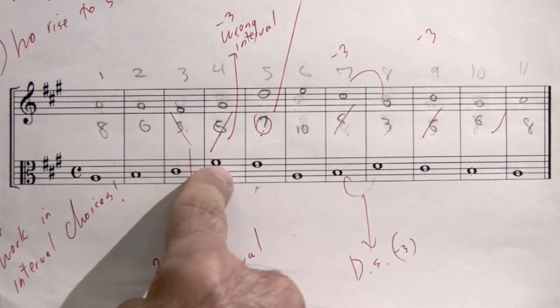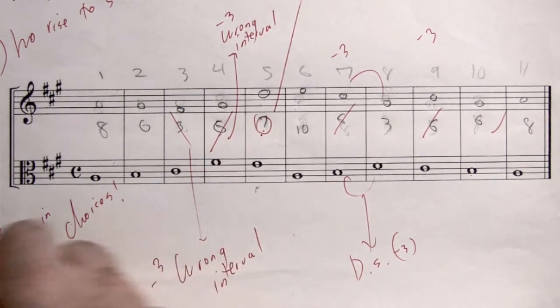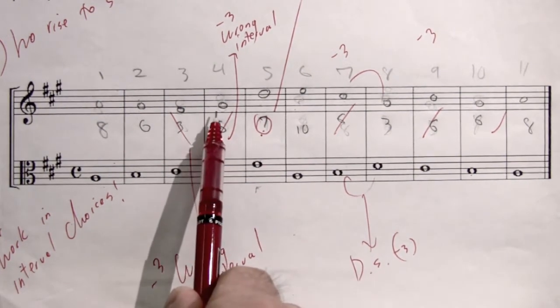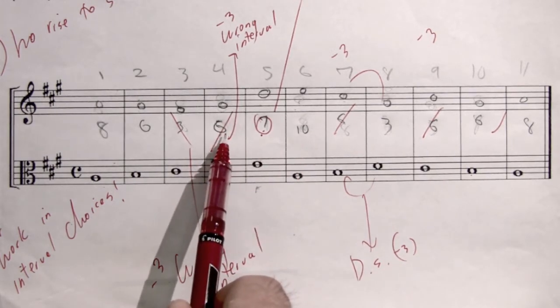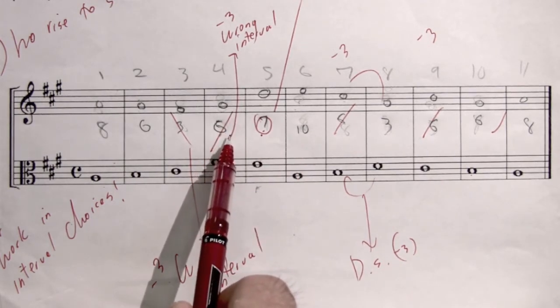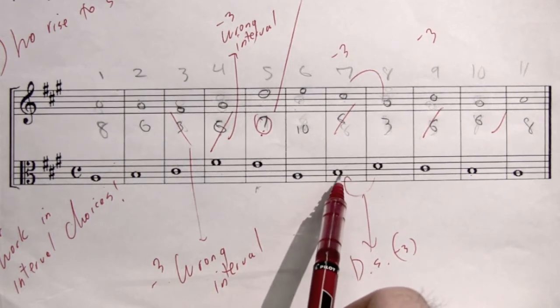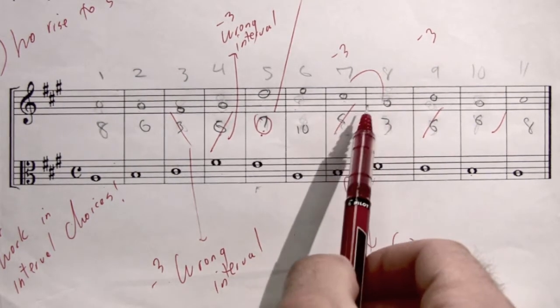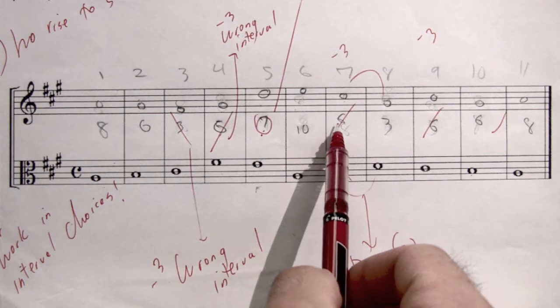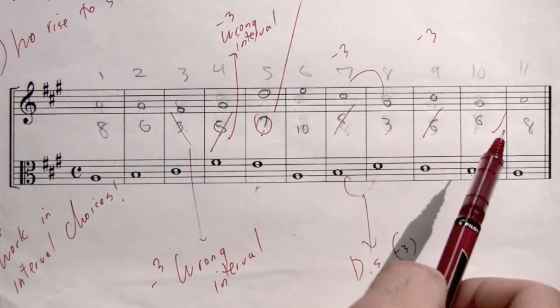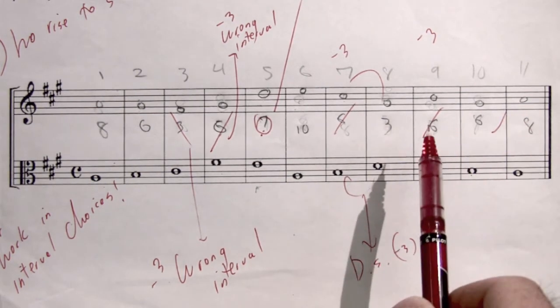Here's another one. F sharp in the alto, G sharp. That's not a sixth, it's a second. This one, B, C sharp. It's not a sixth, it's a second. Careful with the way you count your intervals.